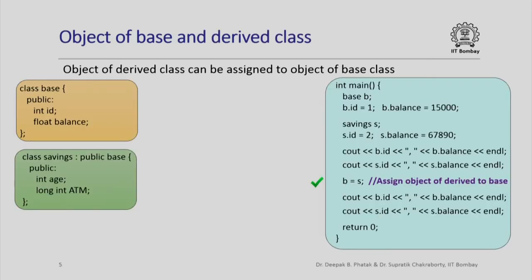Let us talk about objects of base and derived classes. Here is a base class we have seen earlier — it is about a bank account — and here is a derived class, a savings class, talking about a savings bank account. Here is a main program in which I have instantiated objects of the base class, initialized data members, instantiated an object of the savings class, initialized its data members, printed out the values of these data members, and over here I have tried to assign an object of the derived class to an object of the base class.